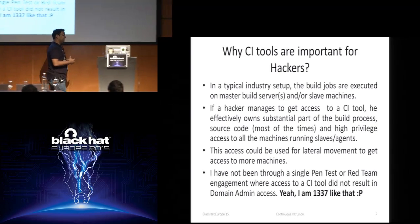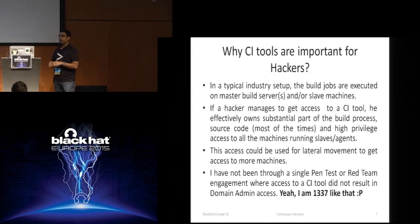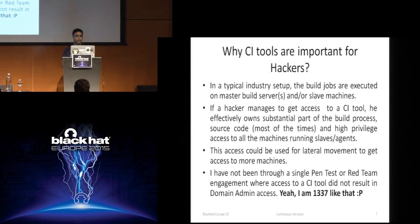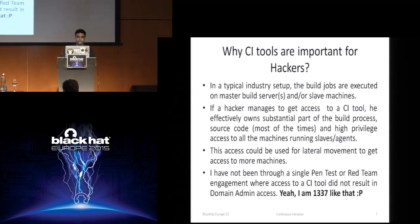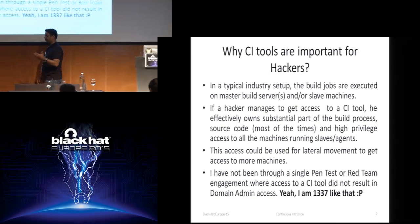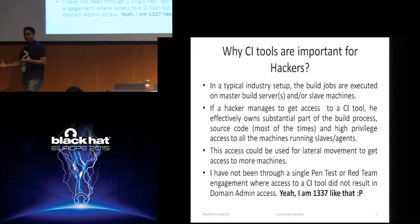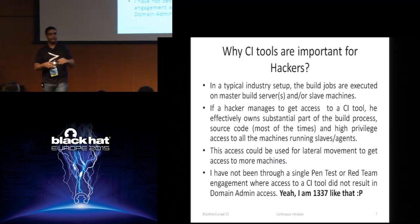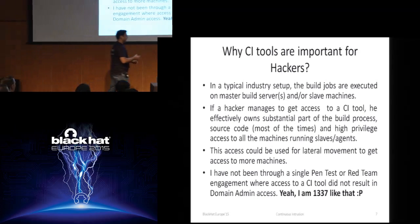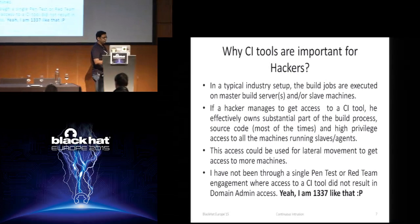In such a case, an attacker also owns a substantial part of source code, or at least the build process, even if not the source code, and a lot more things. And obviously, this access could be used for lateral movement — because of the mismanagement of credentials in a Windows network or in an enterprise network, this access could be used for lateral movement and getting access to much more things.